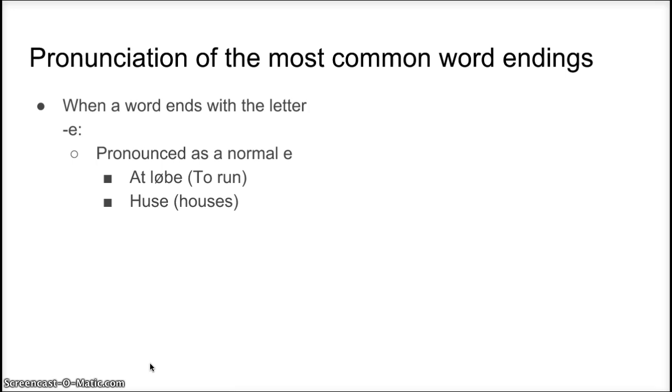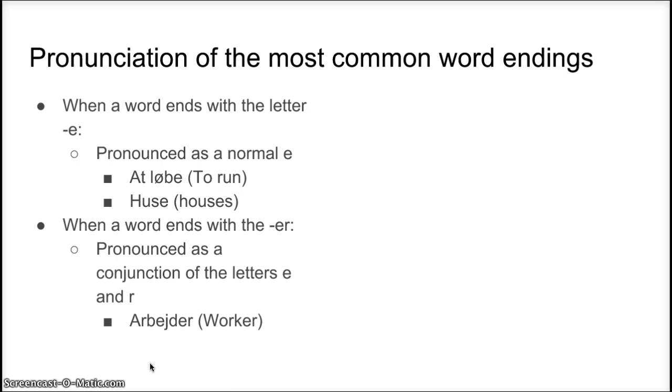The second common word ending is when a word ends with the combination E-R. This is pronounced as a simple conjunction of the letters E and R. In Danish, these letters E is E and R is pronounced R. Therefore, worker would be called arbejder, and cars would be biler.